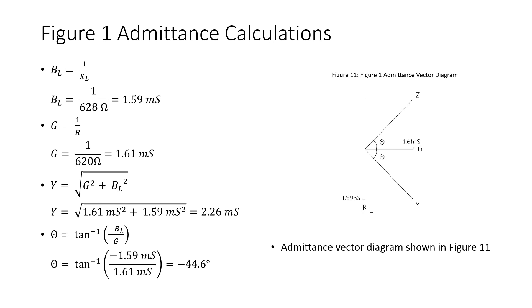Calculating admittance: B sub L is 1 over X sub L, which is 1.59 millisiemens. Conductance G is 1 over R, which is 1.61 millisiemens. Admittance Y is the square root of G squared plus B sub L squared, giving 2.26 millisiemens. The phase angle of admittance is the inverse tangent of negative B sub L over G, which is negative 44.6 degrees. The admittance vector diagram is shown in Figure 11.